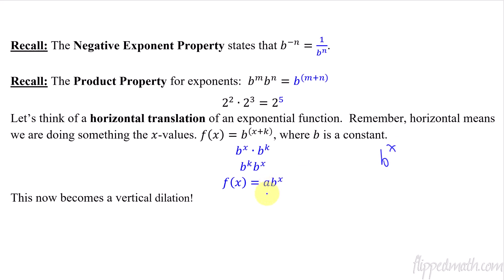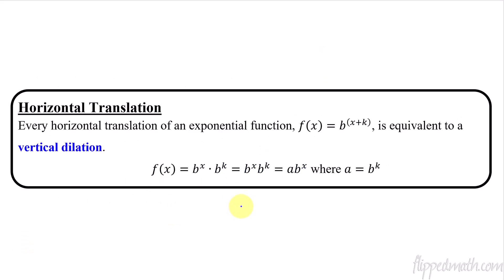So essentially what we're saying is that a horizontal translation is equivalent to a vertical dilation. When you have a horizontal translation — shifting left or right — it's equivalent to a vertical dilation where you stretch or shrink the graph up or down. Here are the statements we just went through to get that conclusion down.